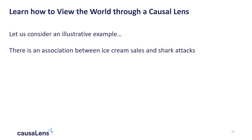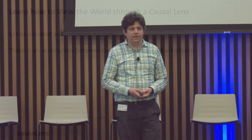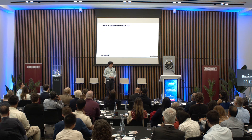Join me in learning briefly how to view the world through a causal lens. Let's consider an illustrative example — it's a somewhat silly example, but you'll see why it's illustrative. Let's consider the relationship between sales of ice cream and shark attacks. It turns out there is an actual statistically significant correlation between these things over time.